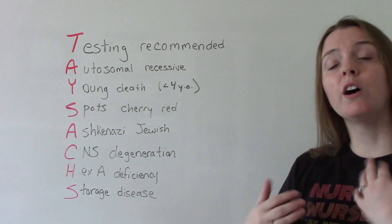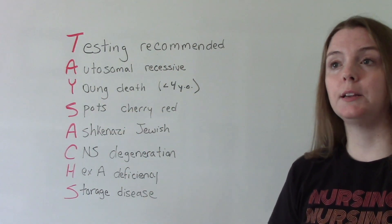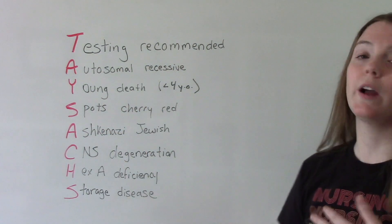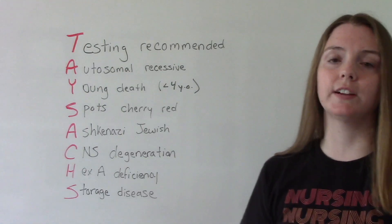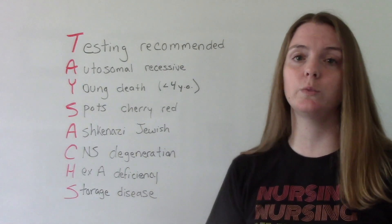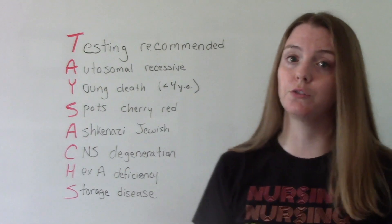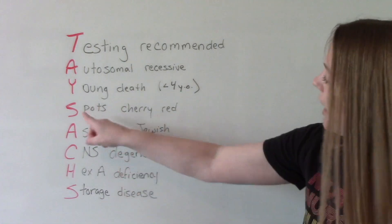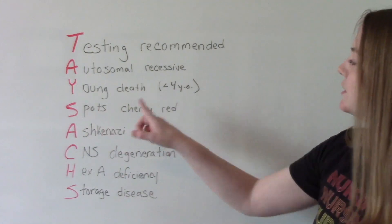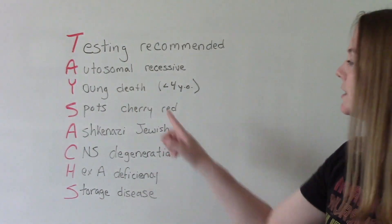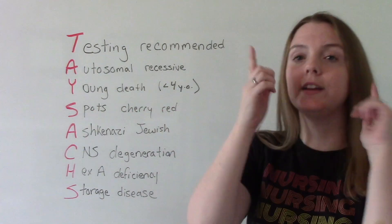Y is for young death. Unfortunately, patients who have this disease don't have a long life expectancy — they usually pass away before the age of four.